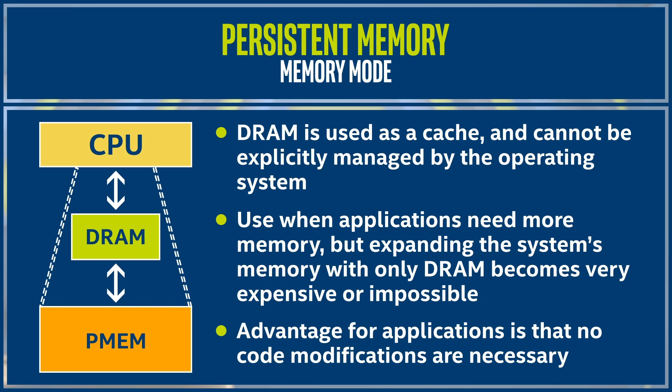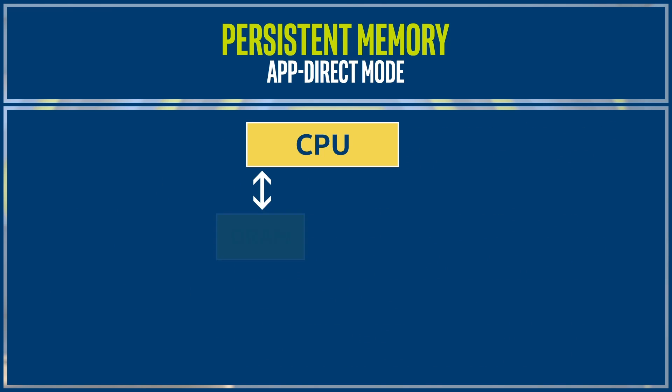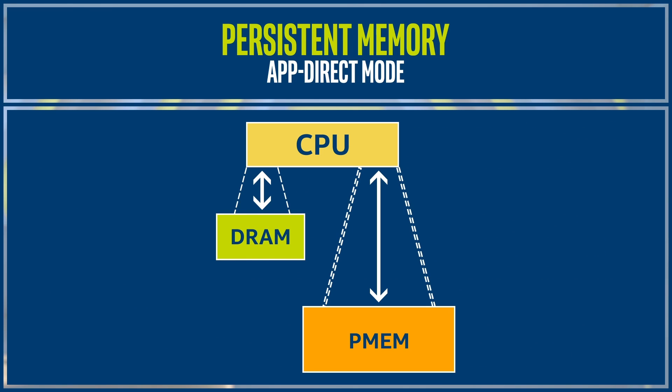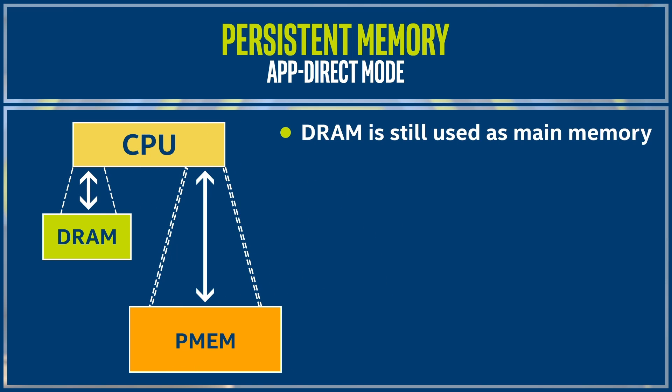The advantage of memory mode for applications is that no code modifications are necessary. However, data is not persistent in this mode. In AppDirect mode, persistent memory is exposed as special block devices to the OS, and applications can use such devices for data persistence. In this case, DRAM is still used as main memory.